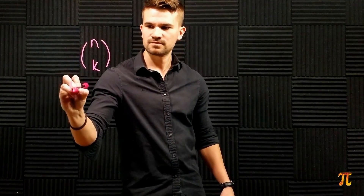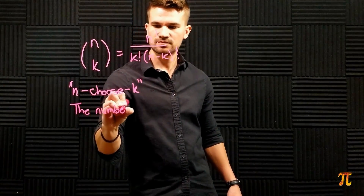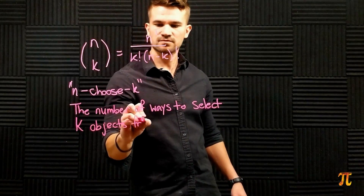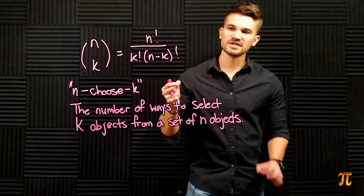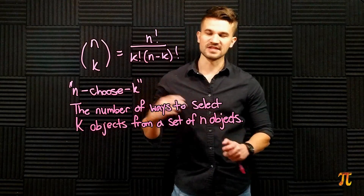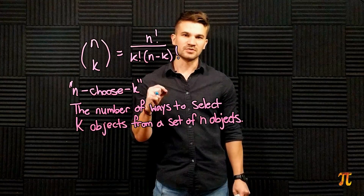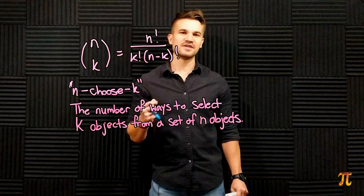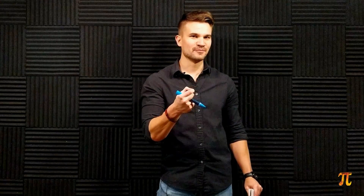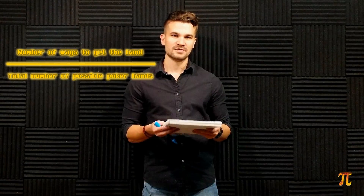This is a pretty underrated formula with a lot of uses, and I don't think it's taught to as many people as it should be. So we're going to use it to calculate the probabilities of different hands in five card poker. To recap: this formula tells us the number of different ways we can select k objects from a set of n objects. To calculate the probability of some poker hand, we find how many ways we can get that hand and divide by the total number of poker hands.